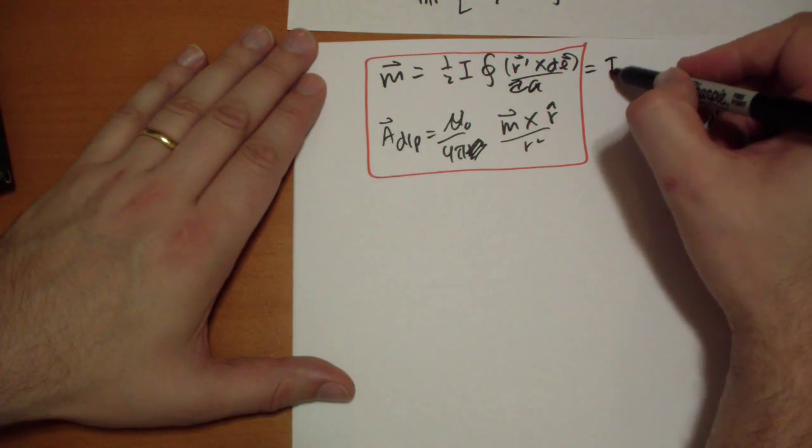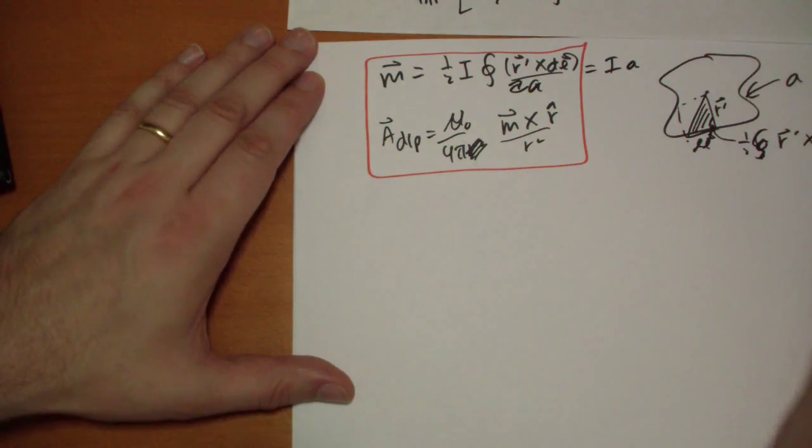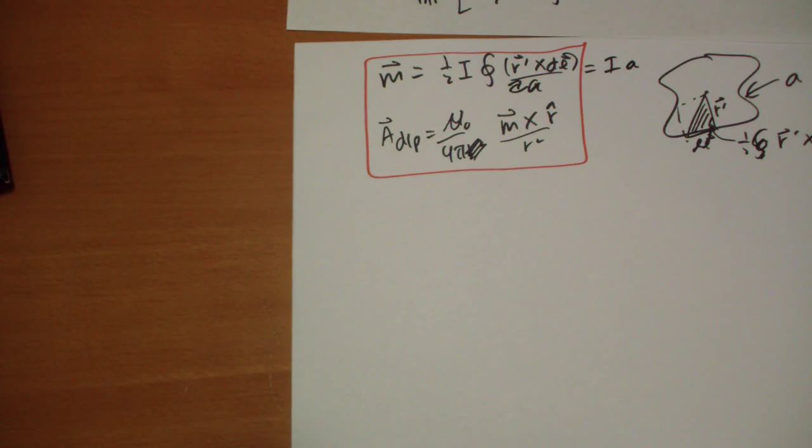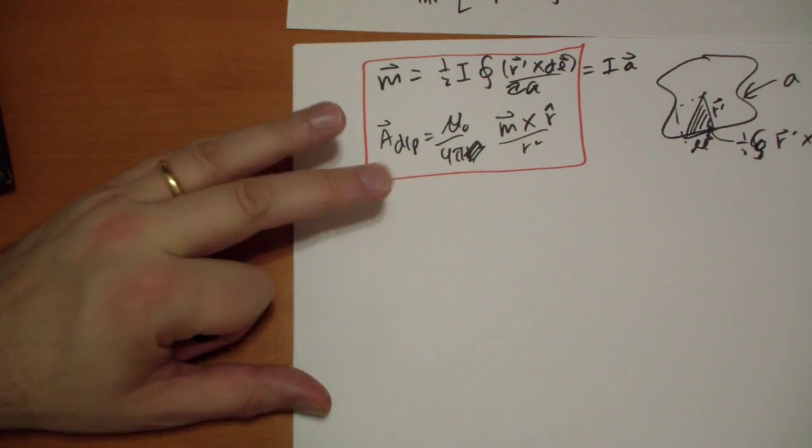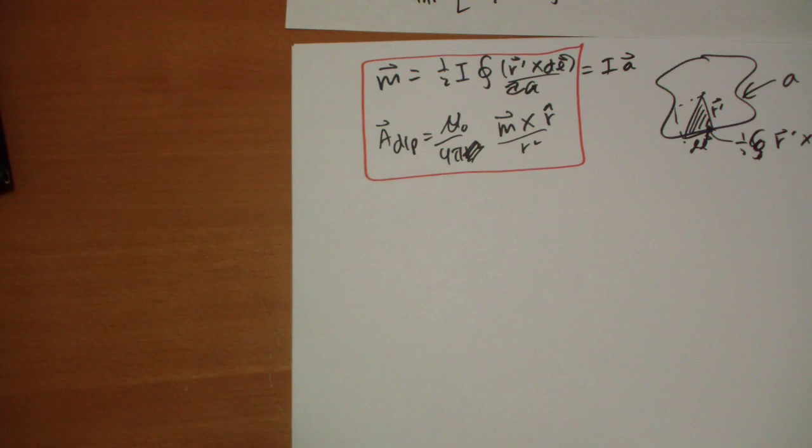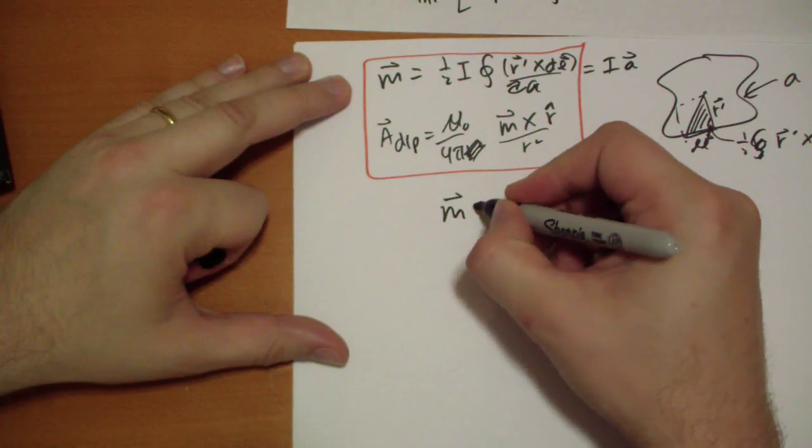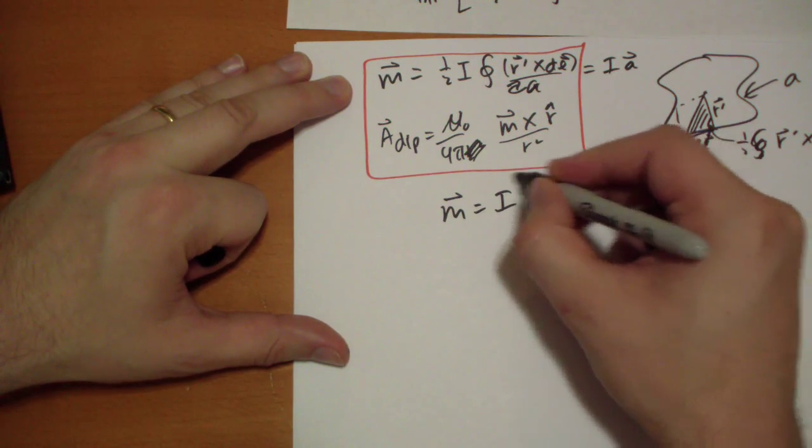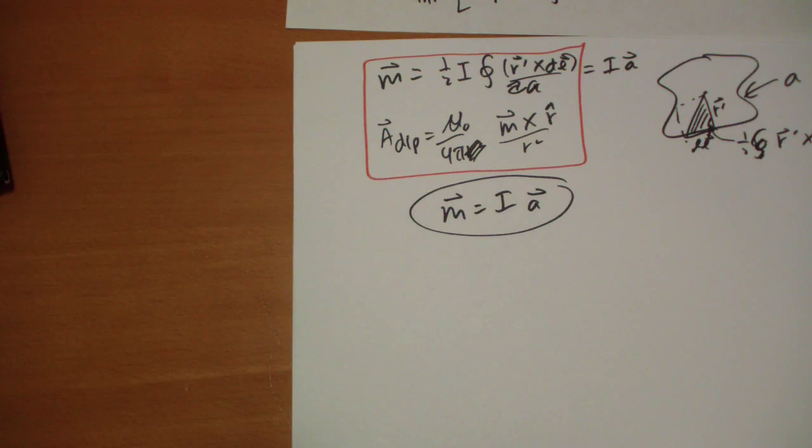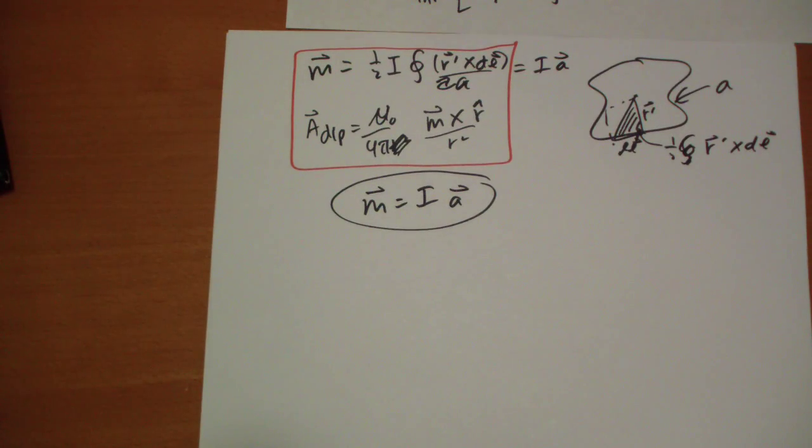Okay? So, we can rewrite this as m is equal to i times a. Okay? Very, very easy to, oh, m vector is equal to a vector. The direction of the area. So, this is actually one of those wonderful results. So, m vector is equal to i times a vector. And it's so fundamental and so wonderful that people often forget where it comes from. And they think that this is the beginning of everything. Because you can work backwards from here and get pretty much anything you want.